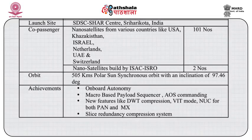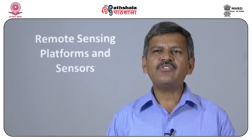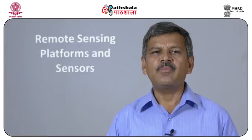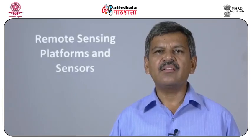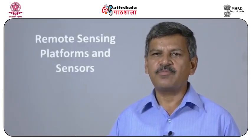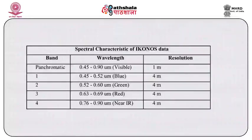The orbit is a 505 km polar synchronous orbit with an inclination of 97.46 degrees. Come to IKONOS. It provides multispectral images at a spatial resolution of 4 meters, whereas PAN is provided at 1 meter spatial resolution. IKONOS-2 was launched in September 1999 and has been delivering commercial data since 2000. IKONOS data records 4 channels of MSS at 4 meter resolution and 1 PAN channel at 1 meter resolution.